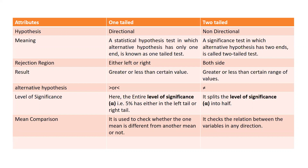Regarding the rejection region: in a one-tailed test, it falls either towards the left side or towards the right side. In a two-tailed test, the rejection region falls on both sides — results greater than or less than a certain range of values. In a one-tailed test, there is no range; the result falls either towards the lesser side or towards the greater side.